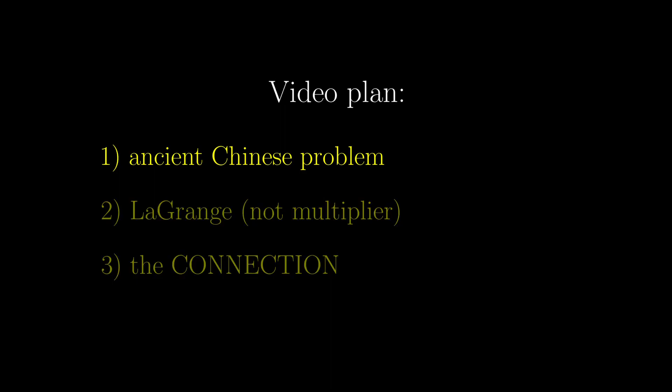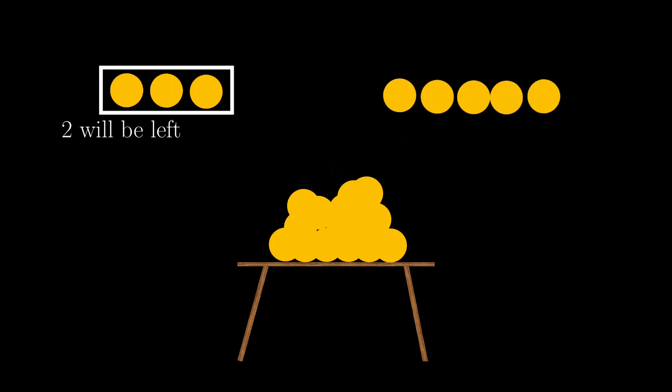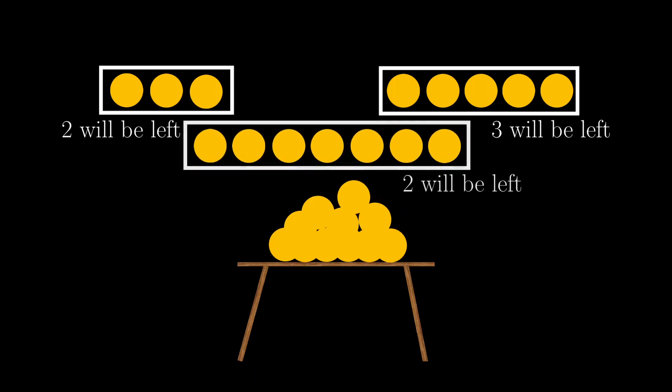So here comes the ancient Chinese problem. There are a number of objects on the table. If you count them in groups of 3, 2 will be left ungrouped. In groups of 5, 3 will be left over. In groups of 7, 2 will be left over. What is the smallest number of objects?